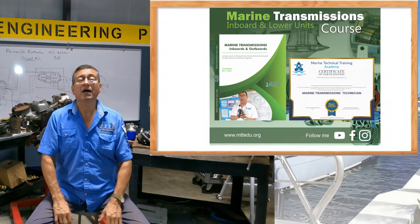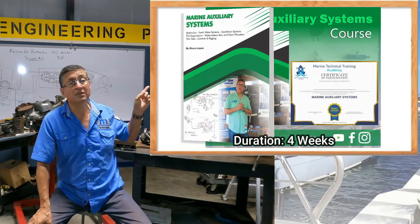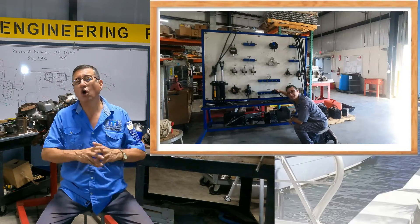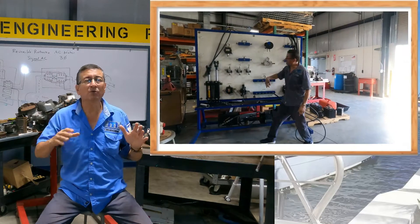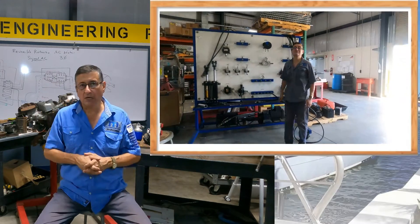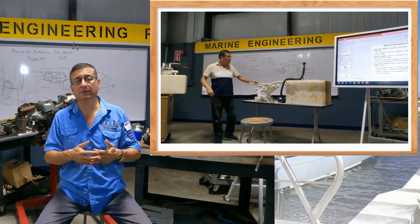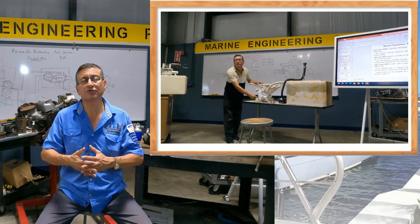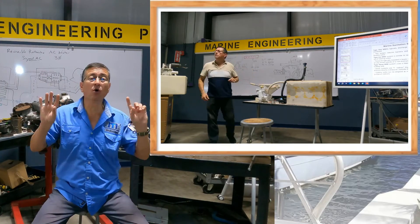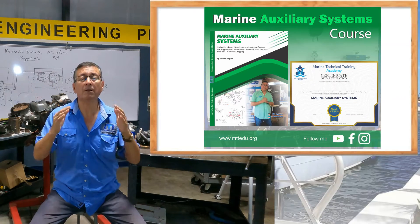After that, we have the course of marine auxiliary systems. The course covers all the hydraulic systems, bow thrusters, stern thrusters, anchor systems, fresh water systems, sanitation systems, and fire suppression systems. It's a complete course related to all the auxiliary systems in a typical pressure yacht.